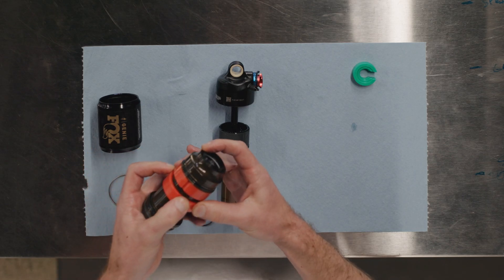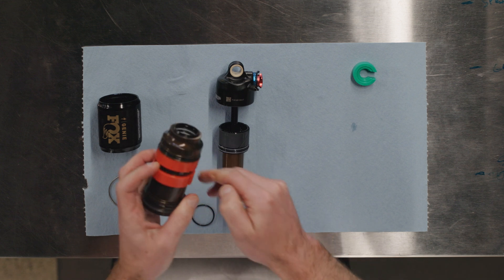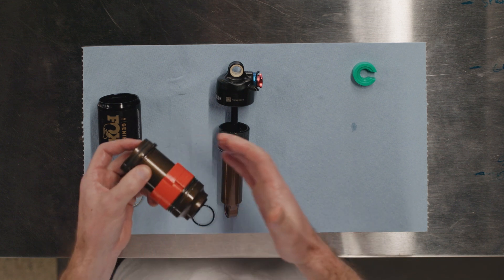To remove the spacer, you're just going to do the opposite. You can clip this off with a little pick or a flat blade screwdriver, and you can remove them pretty easily.